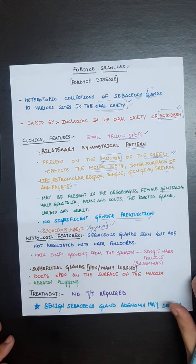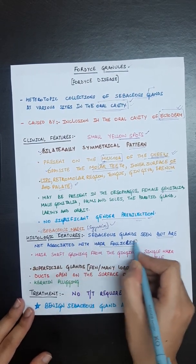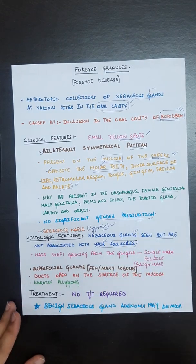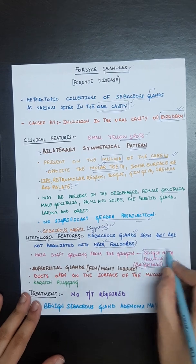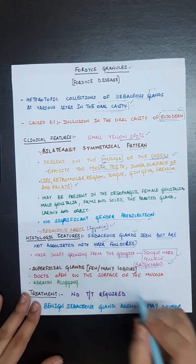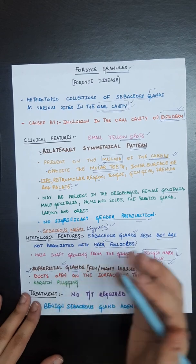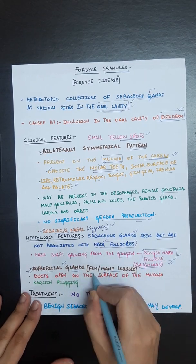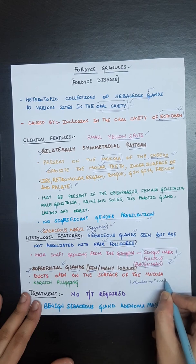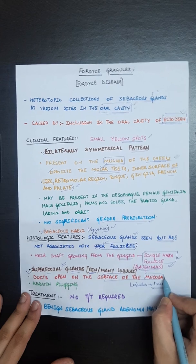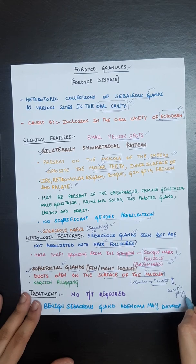Regarding histological features of Fordyce Granules: sebaceous glands are seen but are not associated with hair follicles. These are seen in the oral cavity without hair follicles, though exceptions exist — Bogman discovered a single hair follicle on the gingiva associated with Fordyce Granules. The superficial glands present have few to many lobules, which open into ducts that open on the surface of the mucosa. These ducts show keratin plugging.